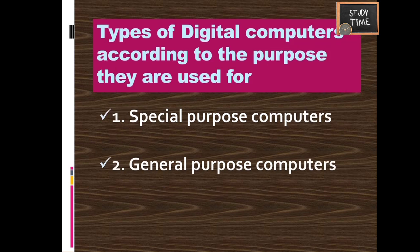Digital computers are classified by purpose into special-purpose and general-purpose computers. Special-purpose computers are designed to do a single specific task, with programs permanently stored in the machine — for example, building counters in malls. General-purpose computers are used to solve a variety of problems with different sets of inputs, such as computers used in banking and sales analysis.